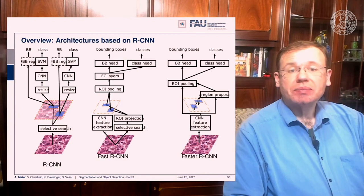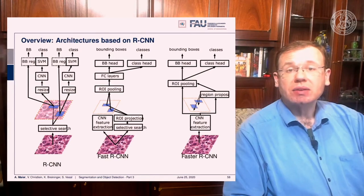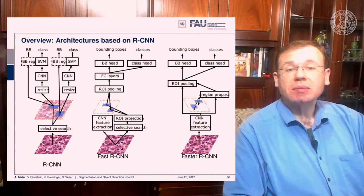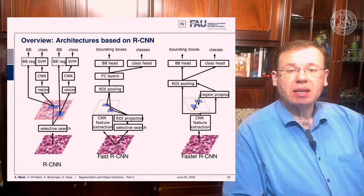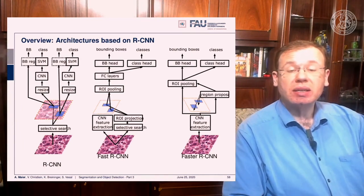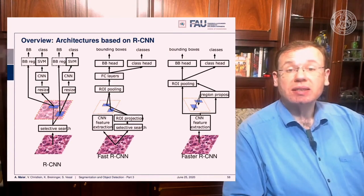Comparing the architectures: RCNN uses selective search to produce regions of interest, then resizes them, applies a CNN, processes results with a support vector machine, and performs bounding box regression. Fast RCNN uses a fully convolutional CNN feature extractor to produce full feature maps, applies selective search to generate ROIs, uses spatial pyramid pooling to feed fully connected layers, and has a bounding box detection head and classification head for multi-task prediction.